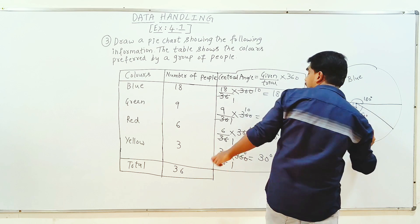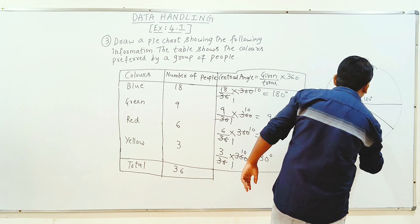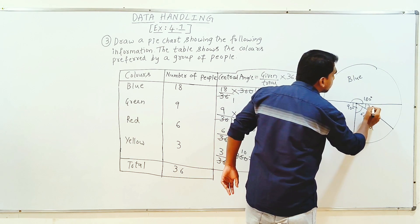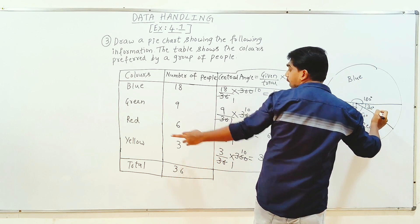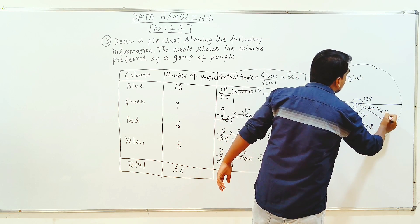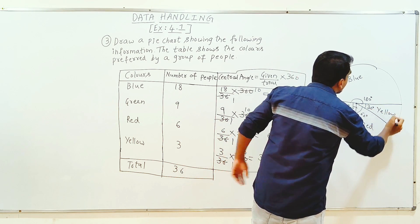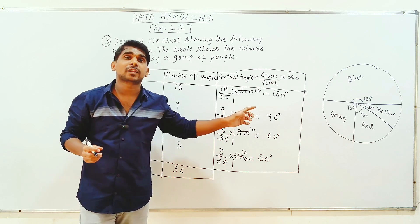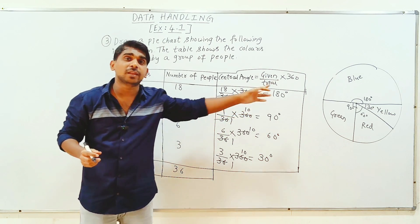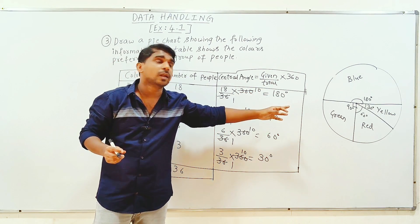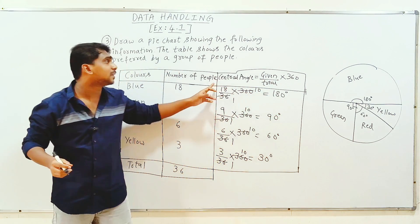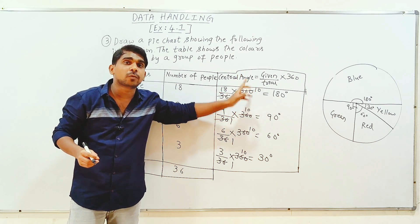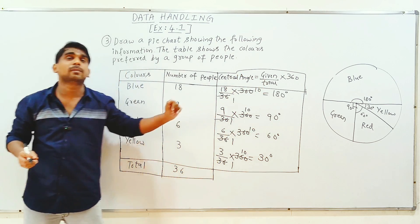This color is 60 degrees — it's a red color. And automatically 30 degrees is the yellow color. This is a pie chart. If you use the protractor, you can draw it neatly. So you calculate the central angle in this way. The formula is given by value divided by total, into 360.